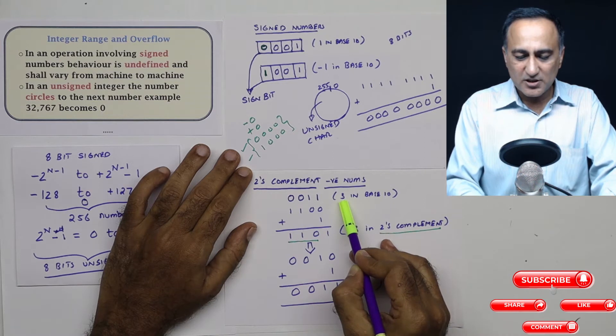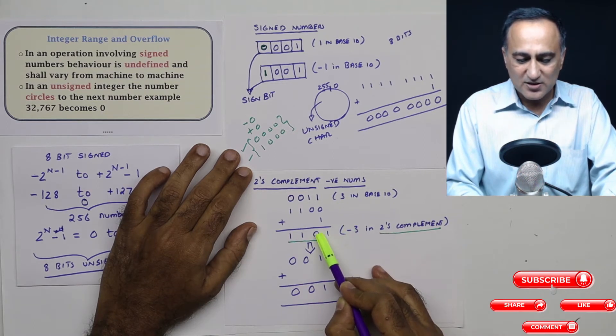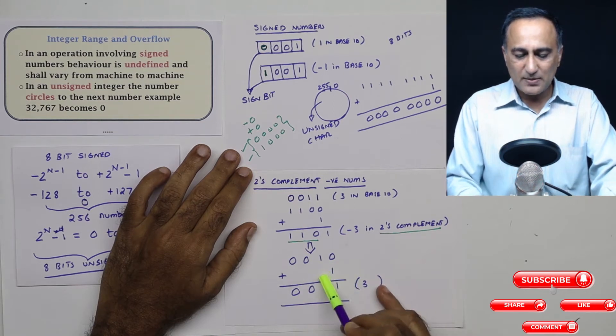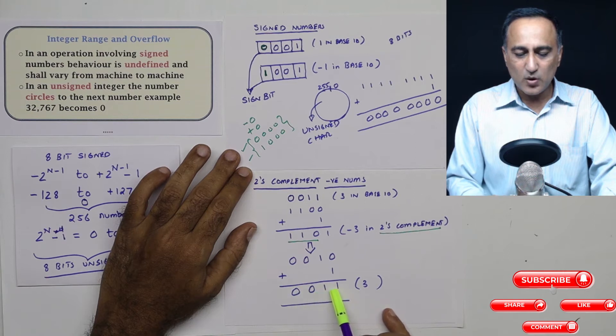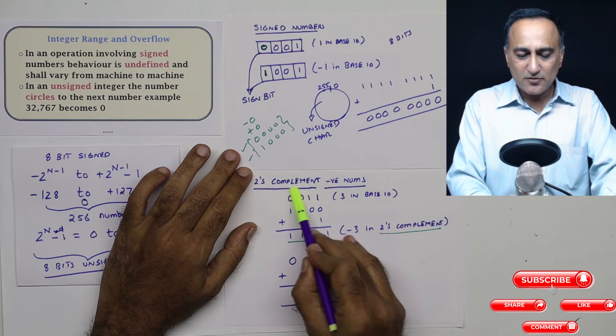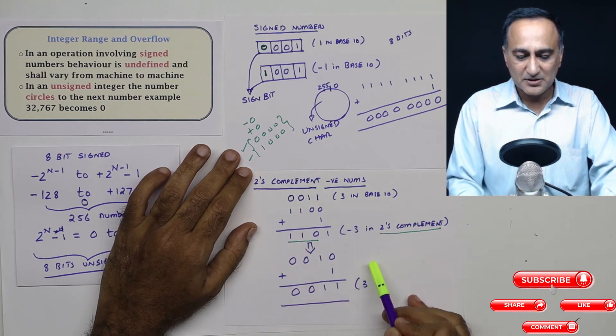Now if I have to bring it back to the original three, I have to again make one as zero and zero as one. So if you see here, it is 0010. Then I'm adding one to this. Once I add one, it becomes 0011, which is nothing but plus three in base 10. So this method of two's complement is used for representing negative numbers.